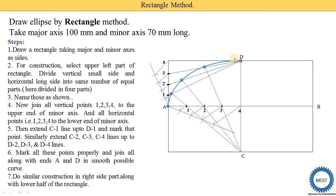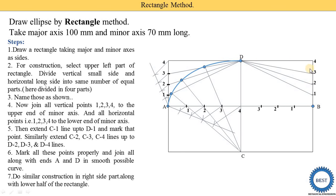After completing the upper-left part, follow the same procedure for the right side and lower half of the rectangle. Again divide the vertical parts into four equal parts — one, two, three, four — and the horizontal line into four equal parts. Connect point one to D, point two to D, point three to D. From C, connect to one and extend, then connect to two and extend, then connect to three and extend. This gives various points that are connected from D to B to form the curve.